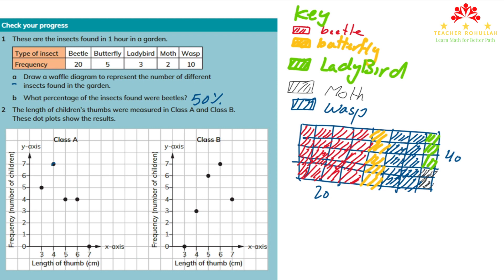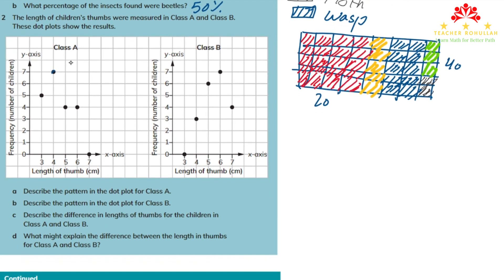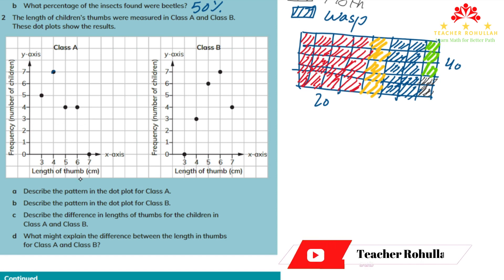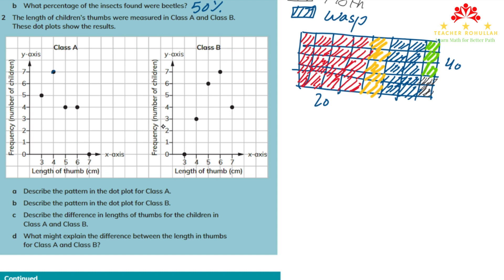We are done with question one. Let's move to question two. Question two says: the length of children's thumbs were measured in class A and class B — these dot plots show the result. On the y-axis we have frequency or number of children, and on the x-axis we have length of thumb in centimeters, for both classes.